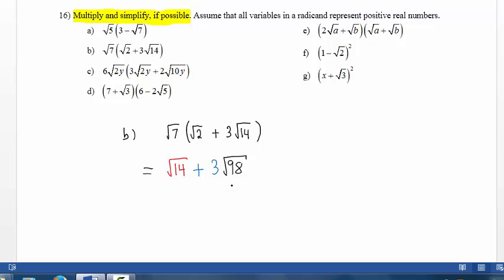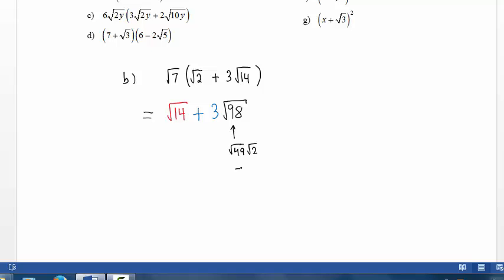The largest perfect square factor of 98 is 49, so we have square root of 49 times square root of 2, because 49 times 2 is 98, which equals 7 times square root of 2. Bringing the rest down, we have square root of 14, which does not simplify since there are no perfect square factors of 14, plus 3 times 7 times square root of 2.